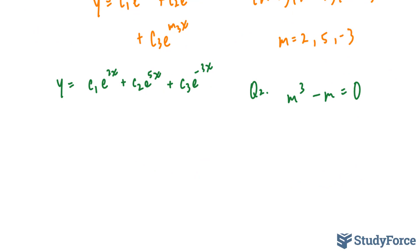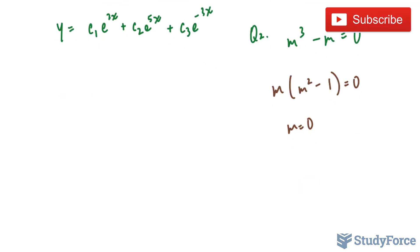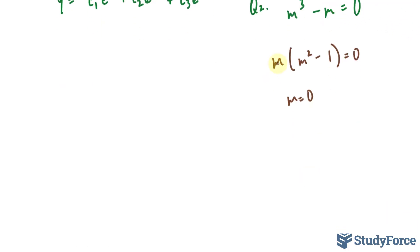To find the m values here, we don't need to graph it. Instead, we can factor it. So we'll factor out an m of both of these terms. This leaves us with m squared minus 1. If I divide both sides by m squared minus 1, I'll end up with m squared minus 1 is equal to 0. Bringing that 1 over, we have m squared is equal to 1. Square rooting both sides, we have plus minus 1 is equal to m. So the three m values that we have are 0, positive 1, and negative 1.